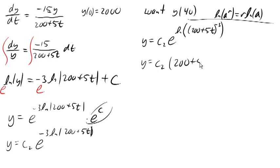Now we can go ahead and use our initial condition. y(0) is 2,000. So we know y is 2,000 when t is 0. So plugging in 0 for t, we get 200 to the negative 3. Solving there, we get a very large number. We get 1.6 times 10 to the 10th as the constant there.